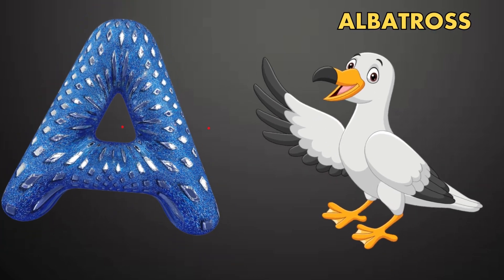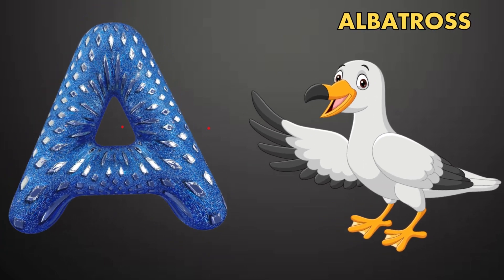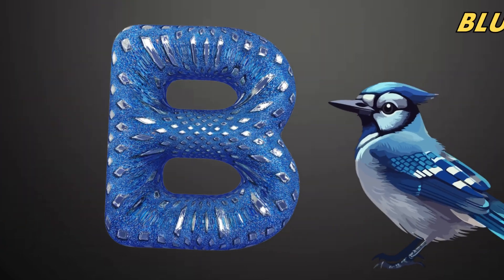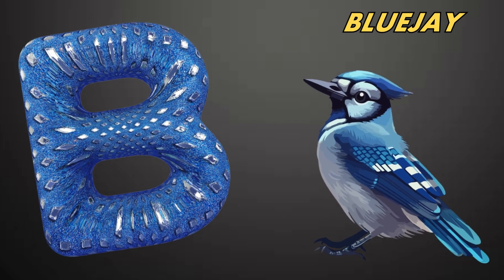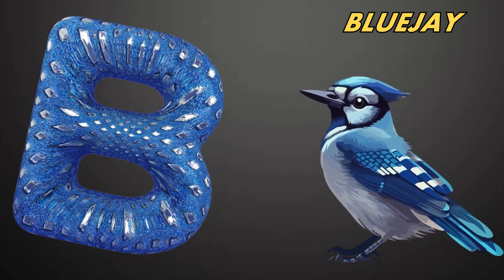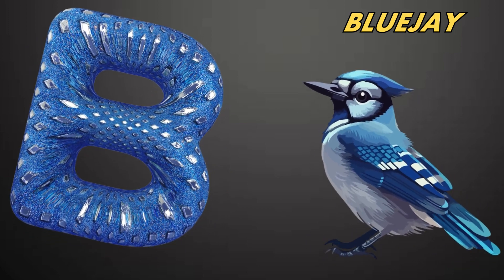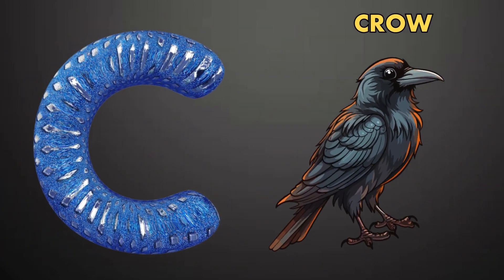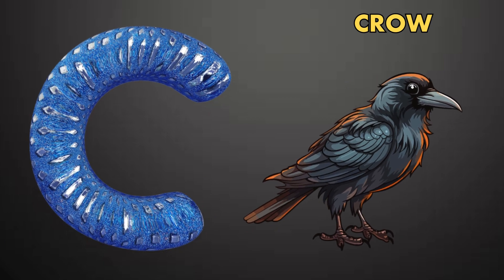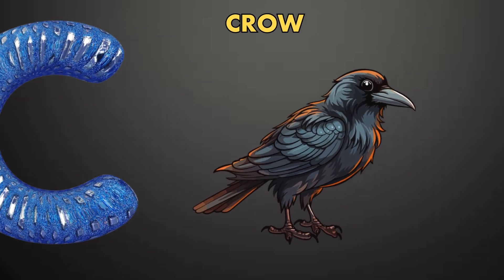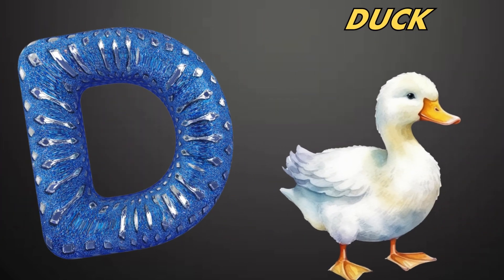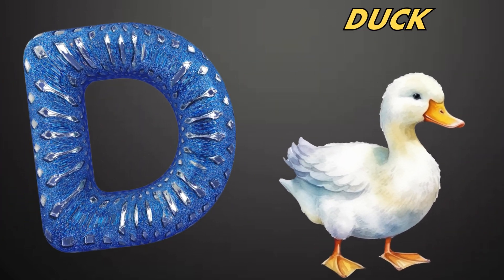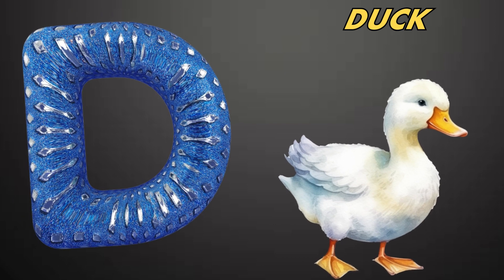A is for albatross. Ah, ah, albatross. B is for blue jay. V, v, blue jay. C is for crow. K, k, crow. D is for duck. D, d, duck.